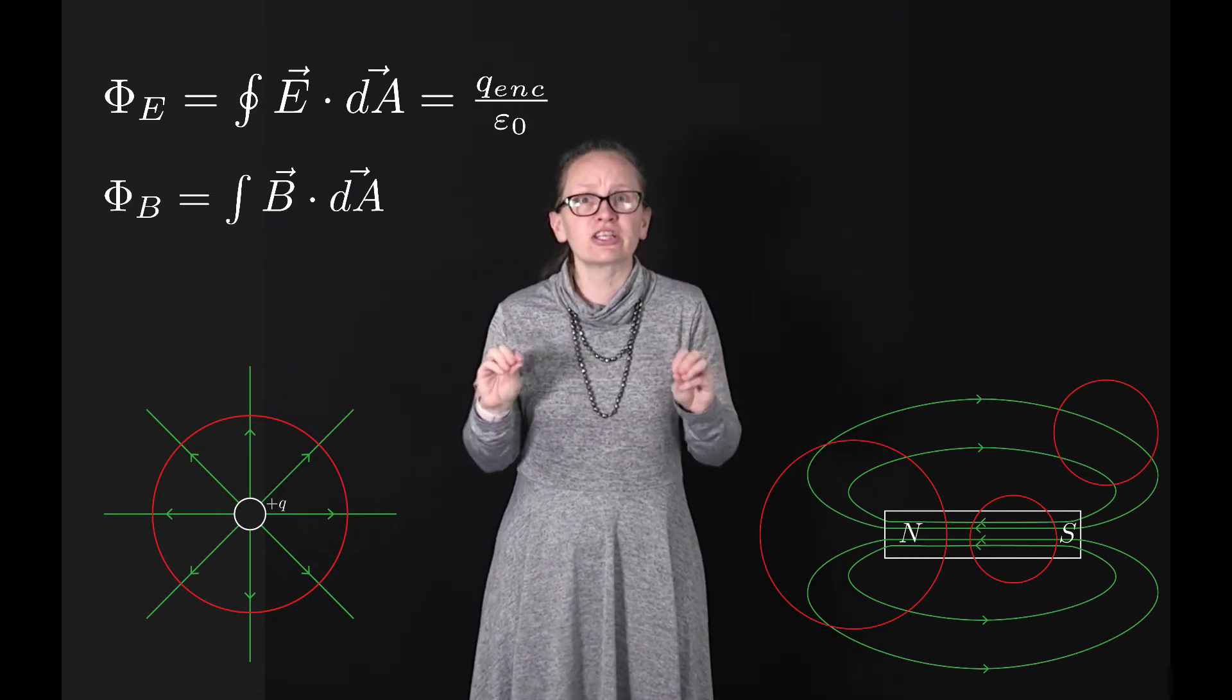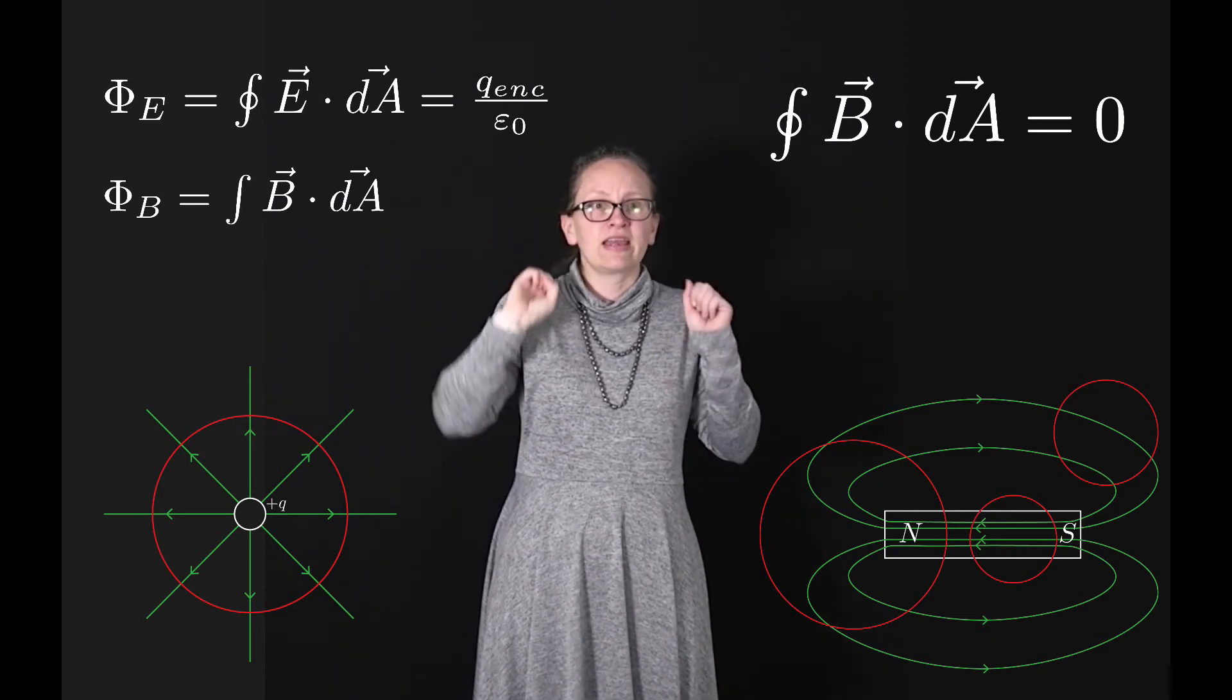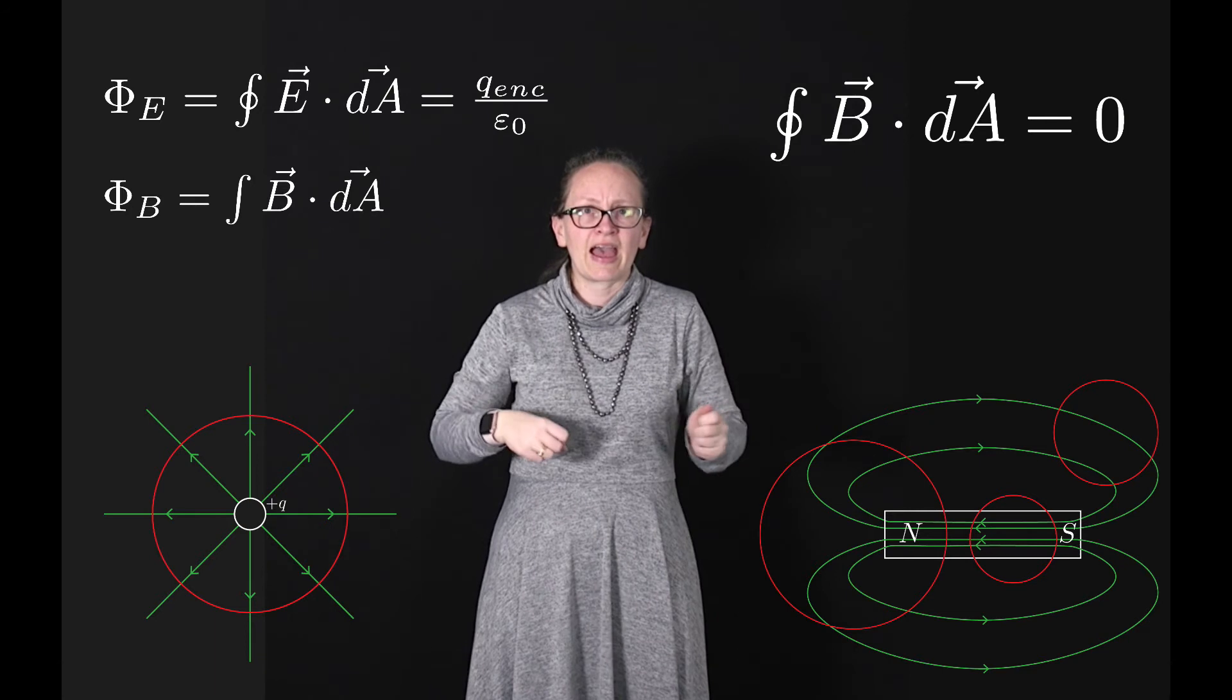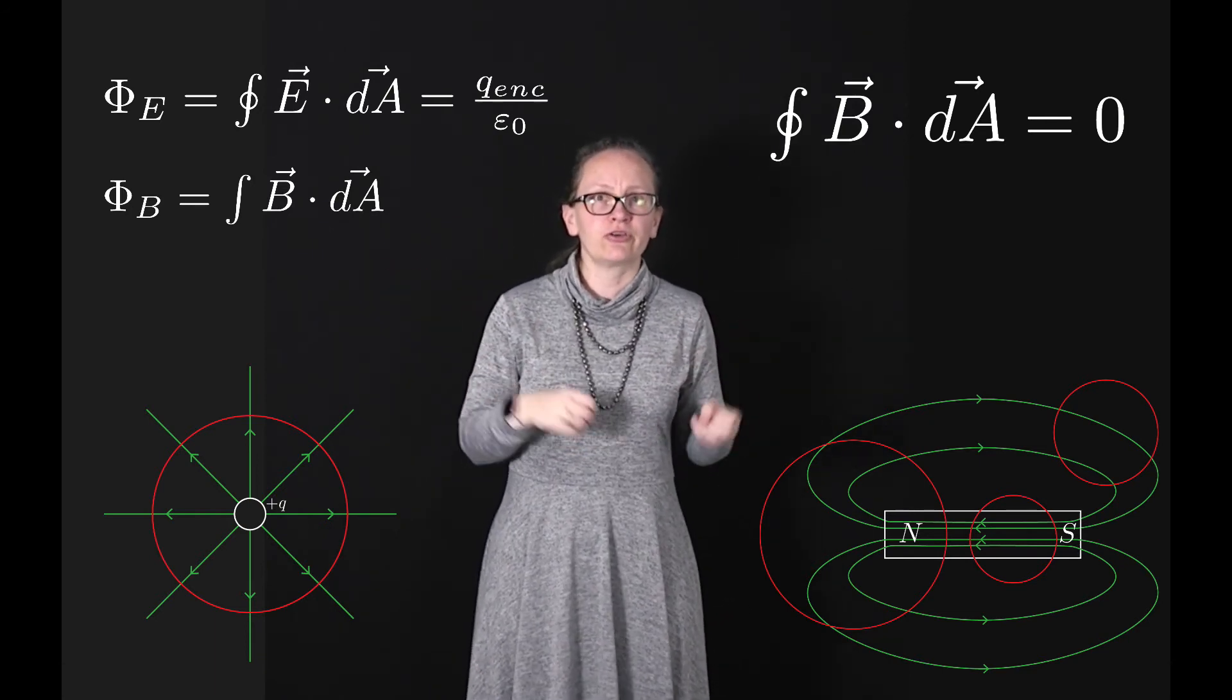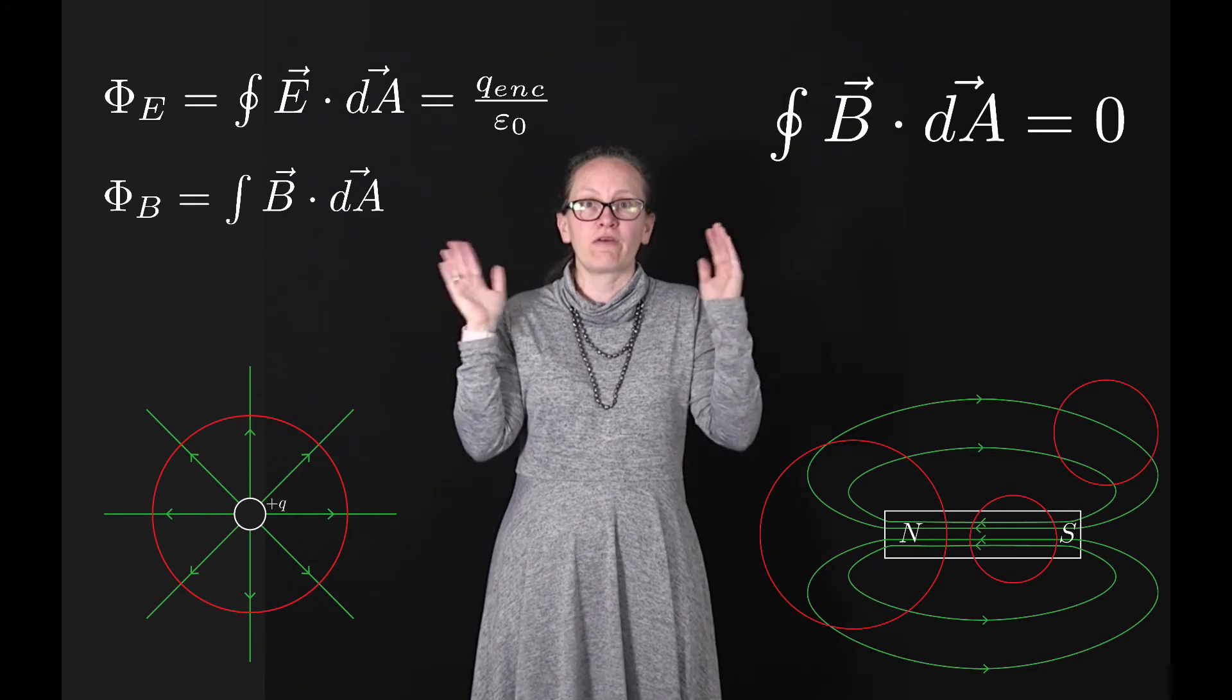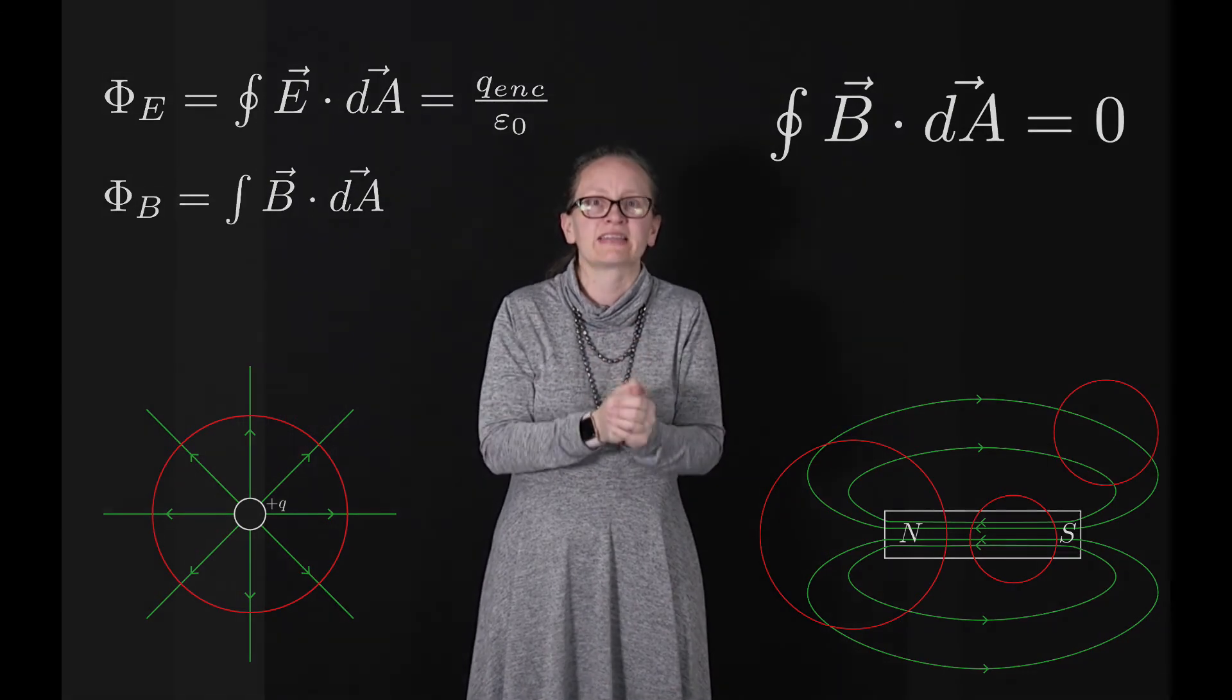So this actually leads us to Gauss's law for magnetism, which tells us that the integral over a closed surface of B dot dA is equal to zero. Now initially, this may appear not especially useful, as it's just zero, who cares? But what this allows us to do is to replace more complex surfaces with simpler ones, which can help us calculate the flux through these complex surfaces. So let's have an example of a problem where we use that technique now.